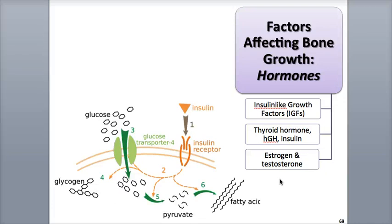Androgens can be secreted by the adrenal glands in both men and women, while estrogens can be produced from androgens in the adipose tissue. Both of these hormones increase the activity of the osteoblasts, which results in the deposition of more matrix, and trigger the growth spurt that occurs in our teens. Estrogens also influence sexual changes in the female skeleton, including pelvic widening to accommodate pregnancy. Estrogen also acts as an off switch to growth at the epiphyseal plates, triggering their closures in our late teens and early 20s.